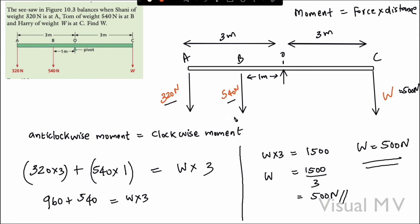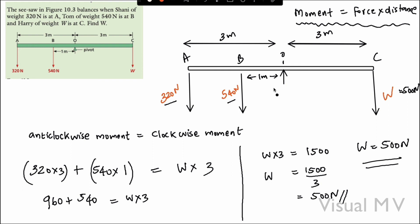To summarize: on the left side there are two anti-clockwise moments — one due to the force at A and one due to the force at B — giving 320 × distance + 540 × distance equal to W × distance on the right side. The equation for moment is force into distance. I think the concept is clear. If you have any doubts, you can ask using the comment box. Thank you.